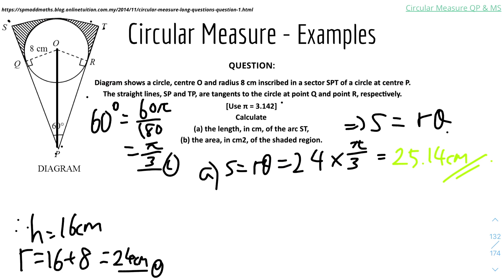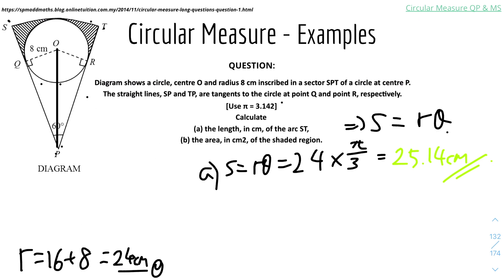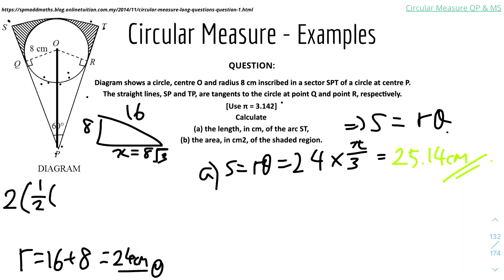For part two, calculate the area of the shaded region. The strategy is to find the area of the two triangles and the area of the circular segment, then subtract from the large sector. First, the two triangles: we know the hypotenuse is 16 and the radius is 8. Using Pythagoras, the third side x = √(16² − 8²) = 8√3. Area of both triangles = 2 × ½ × 8 × 8√3 = 64√3.